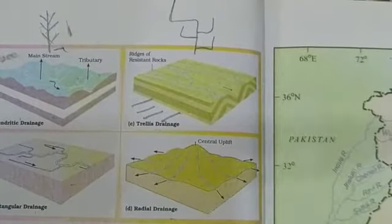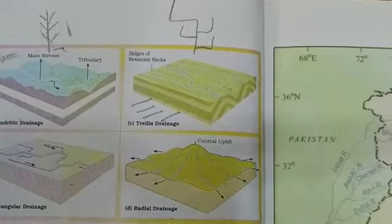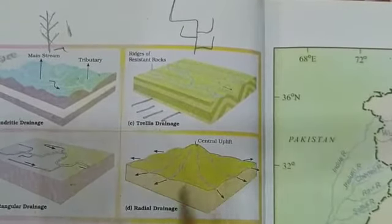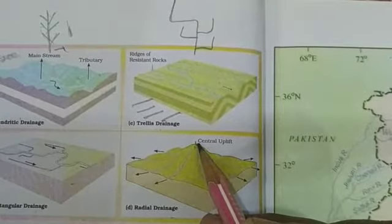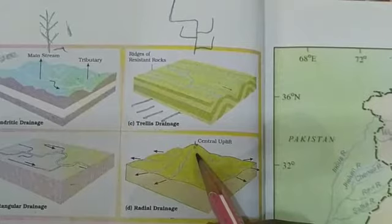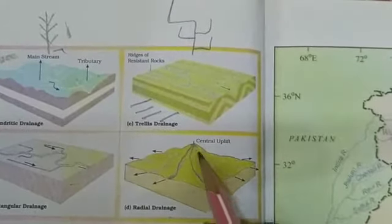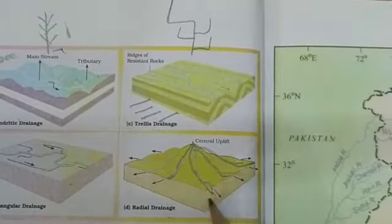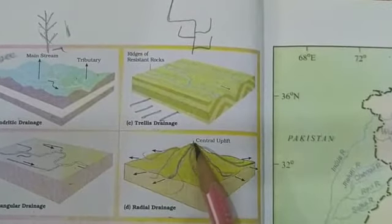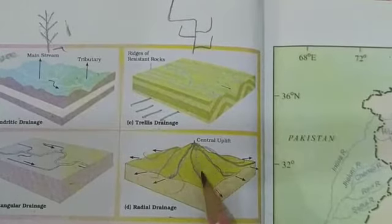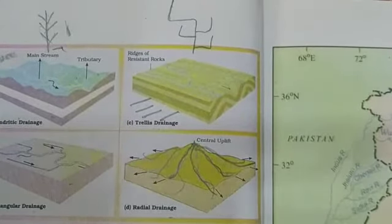The fourth is radial drainage. Radial drainage develops when streams flow in different directions from a central peak or dome. A dome means a centrally elevated, dome-shaped uplift. From this central uplift, one main stream flows here, another drains there, and rivers branch out in different directions from the central peak, flowing outward all around.